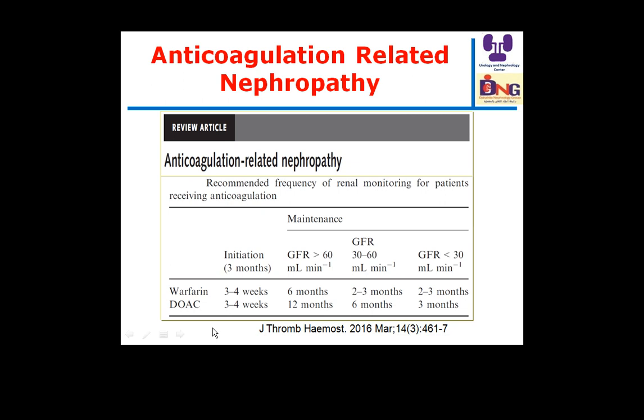The most important risk factors for anticoagulant-related nephropathy are high serum creatinine, presence of baseline chronic kidney disease, and targeting a high INR level above three. So we should be cautious about these points. There is a recommendation for more frequent kidney function monitoring with warfarin compared to direct oral anticoagulants.